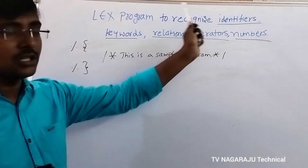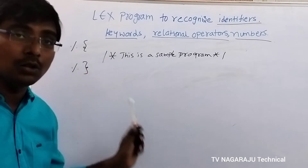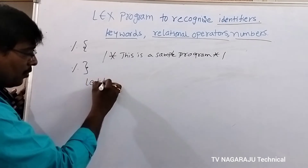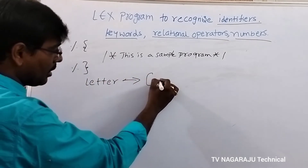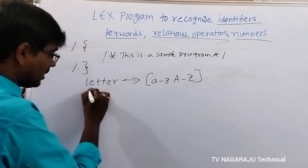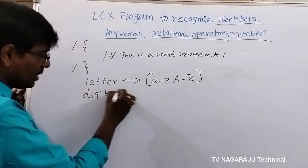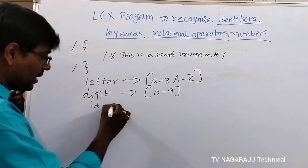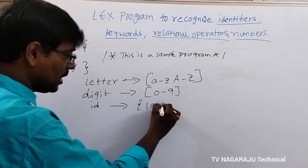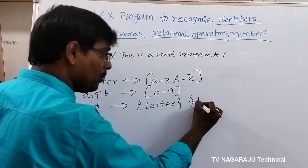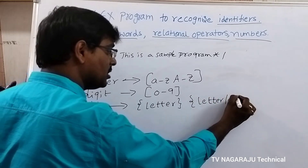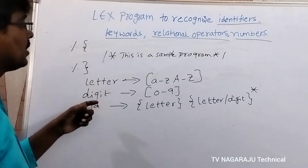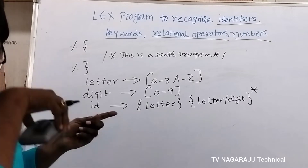If you need any regular expressions you can write them down too. For example, the regular expression for identifier: first, letter is defined as [a-zA-Z], and digit is [0-9]. By using letter and digit we form an identifier — the first character is a letter followed by zero or more letters or digits. This is the regular expression for identifier.